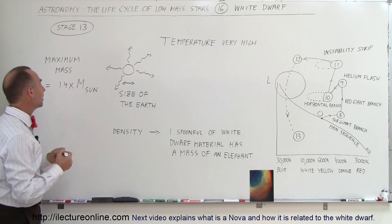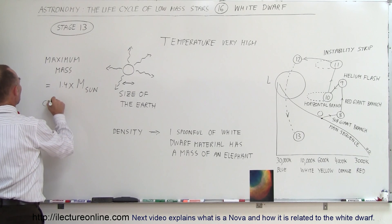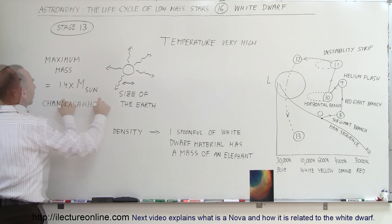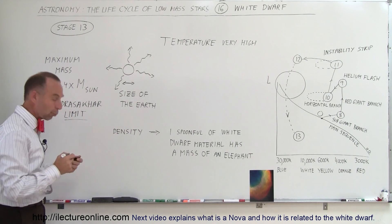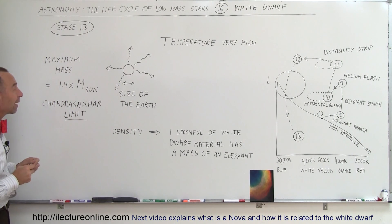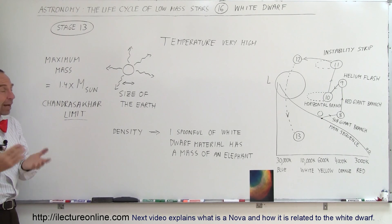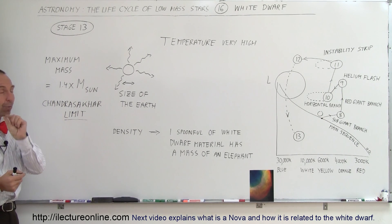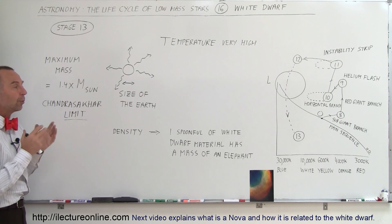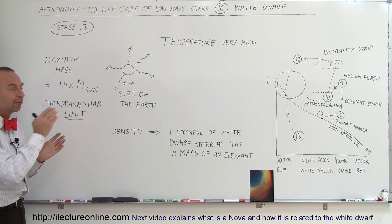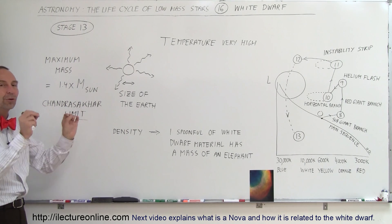This very special limit is known as the Chandrasekhar limit — the ultimate size limit for any white dwarf, which is 1.4 times the mass of the sun. About 99.9% of all the stars will all become white dwarfs and end their life like that — small little balls of very hot carbon material just floating around in space.